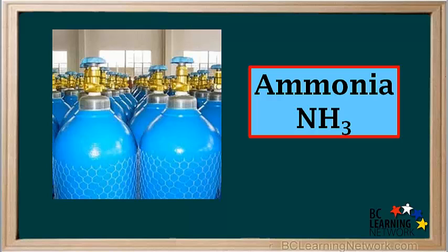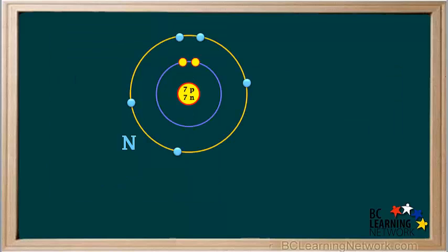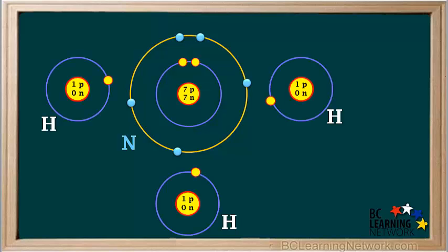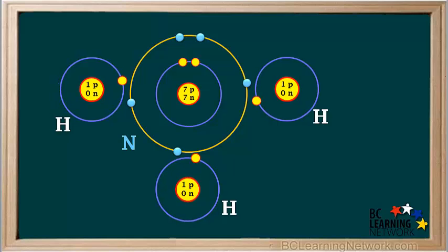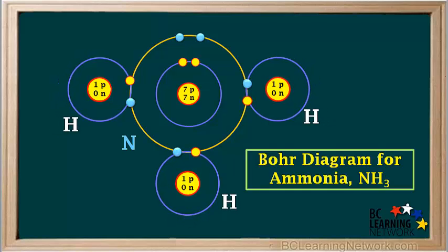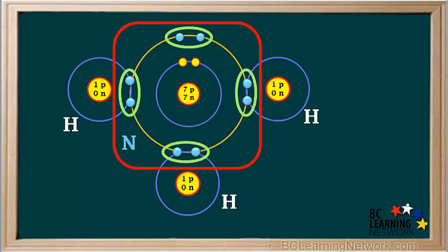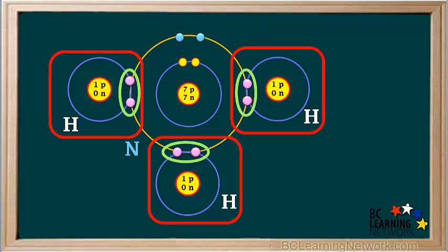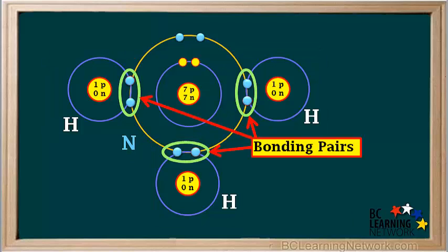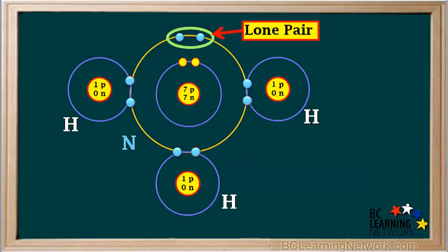A gas used widely in industry is ammonia, NH3. Let's use Bohr diagrams to look at the formation of a molecule of ammonia. Here is a nitrogen atom with three unpaired electrons in its valence shell. To form a molecule of ammonia, three hydrogen atoms bond to this nitrogen atom. And this is the Bohr diagram for a molecule of ammonia, NH3. We can see that the nitrogen atom has a stable octet, and each hydrogen is stable because it has a pair of electrons like the noble gas helium. In the molecule, these three pairs of electrons are called bonding pairs, because each pair forms a covalent bond. And this pair on top is called a lone pair, as it is not involved in bonding.